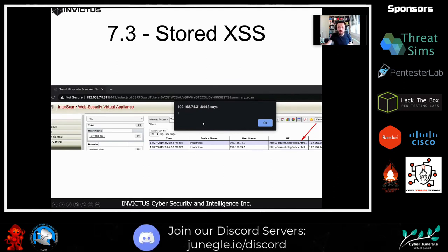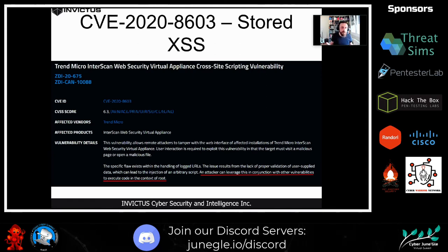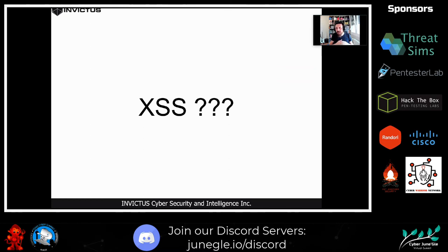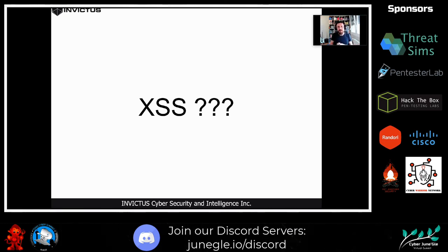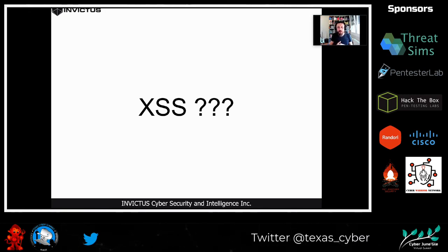Instead of popping an alert box, we can use the XSS to send an AJAX request to the command injection endpoint. I reported that vulnerability to ZDI as well. The vulnerability description states: an attacker can leverage this in conjunction with other vulnerabilities to execute code in the context of the root user. But cross-site scripting alone isn't enough for me — it requires user interaction for exploitation. I needed a better way to continue the exploitation.